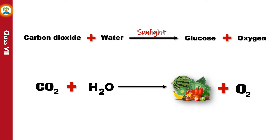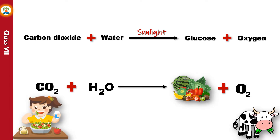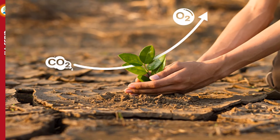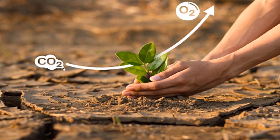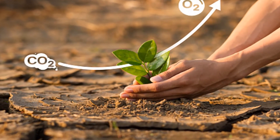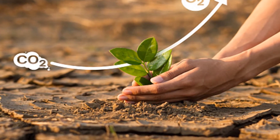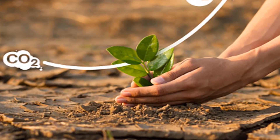Photosynthesis converts light energy into chemical energy. The food prepared by green plants is used by all other living organisms. Photosynthesis also helps in maintaining the ratio of oxygen and carbon dioxide in the atmosphere, thus plants are vital for maintaining life.